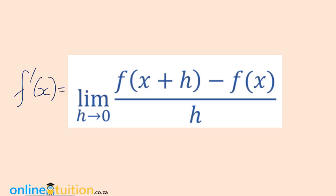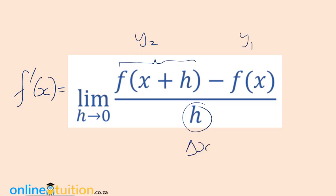We give it the special notation f prime of x. Remind yourself: going back, f(x+h) was nothing more than y₂ and f(x) was y₁. And h was nothing more than delta x, which is x₂ minus x₁. So we're going to use this definition and apply it to several functions today.